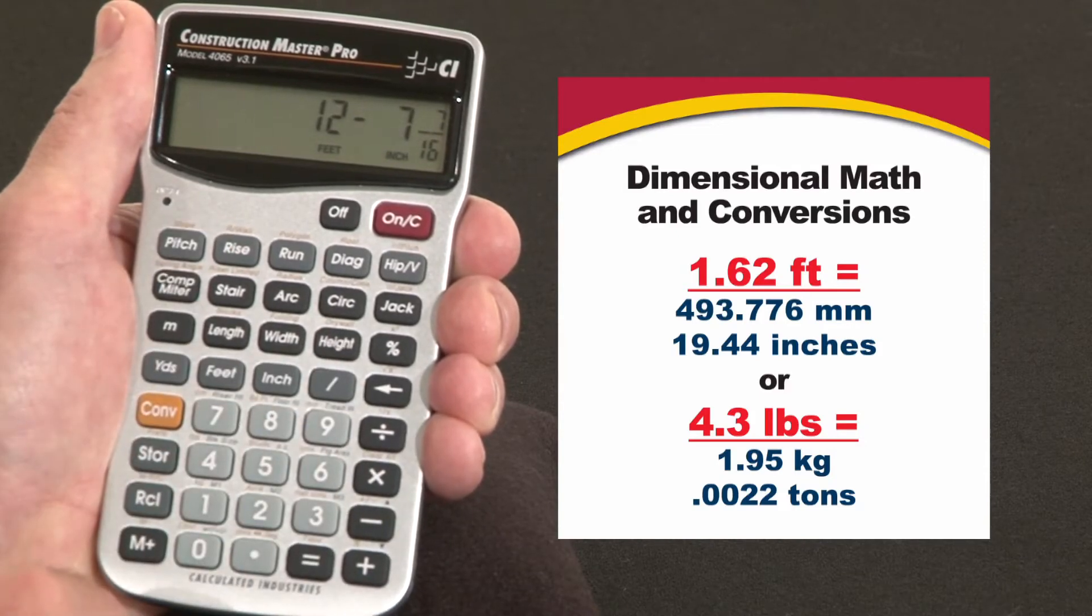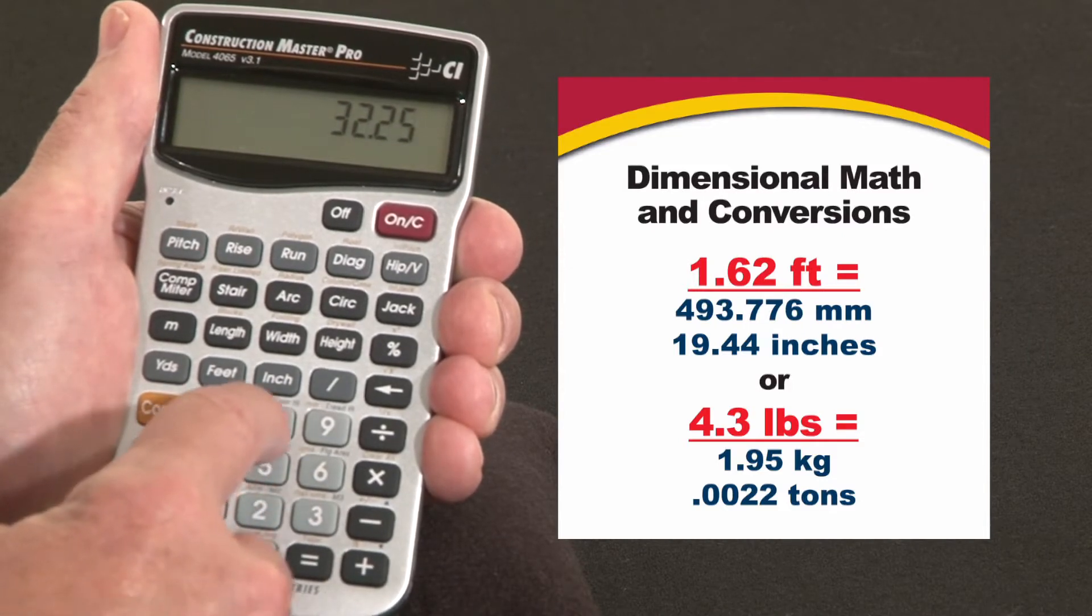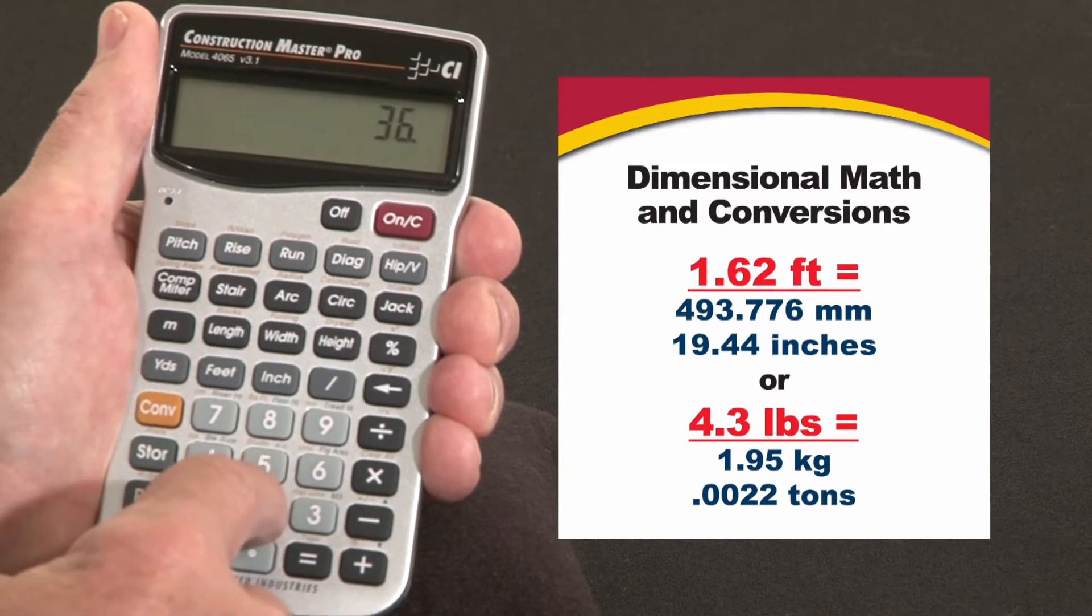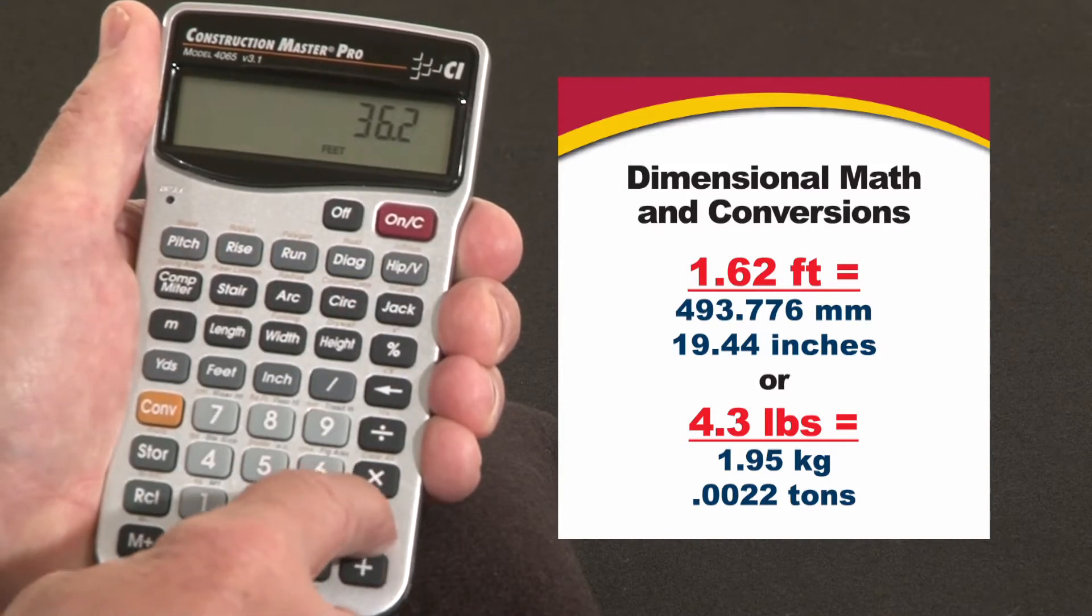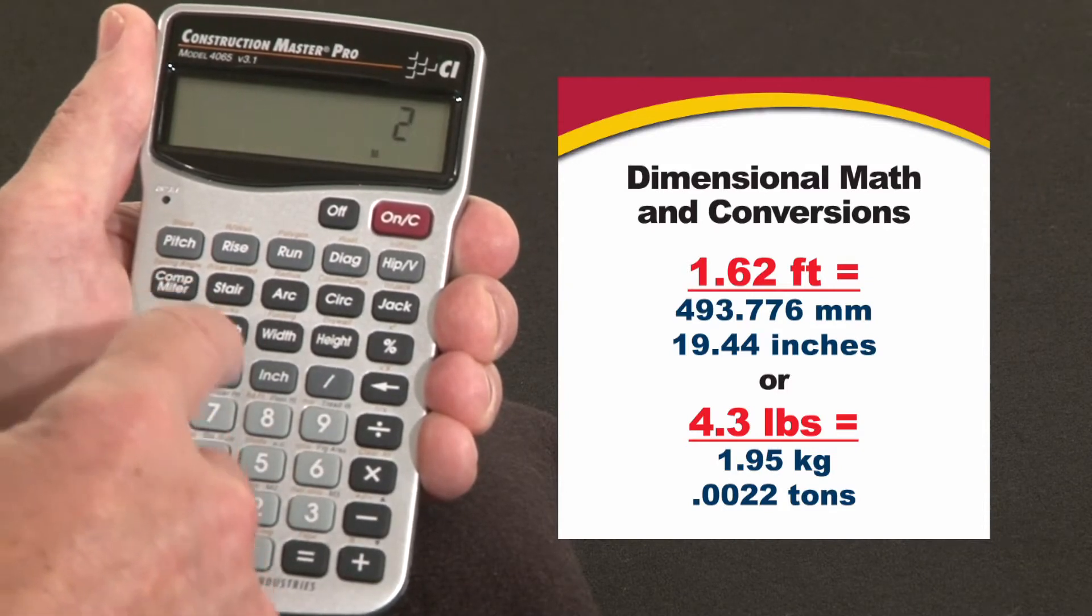Now you're not locked into the feet inch fraction format. You can mix formats together. For instance, plus thirty-two point two five inches plus thirty-six point two feet minus three yards plus two meters. Just to mix it up.